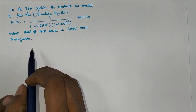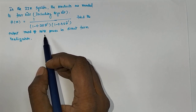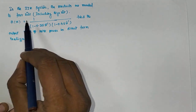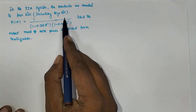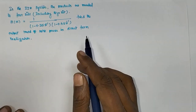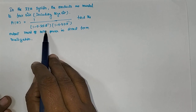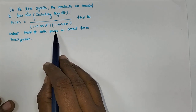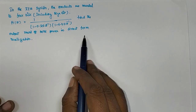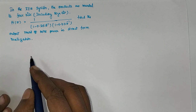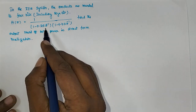Hello viewers, welcome to carrier guidance DSP playlist. In this video we are going to see about product quantization error - that is a problem in the IIR system. The products are rounded to 4 bits including the signed bit. The transfer function is 1 divided by (1 minus 0.35 z⁻¹)(1 minus 0.62 z⁻¹). Find the output round-off noise power in the direct form realization.